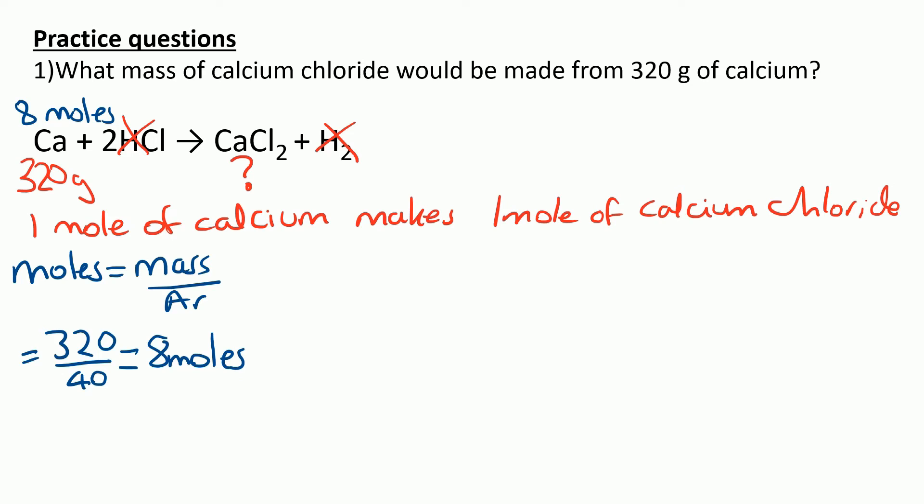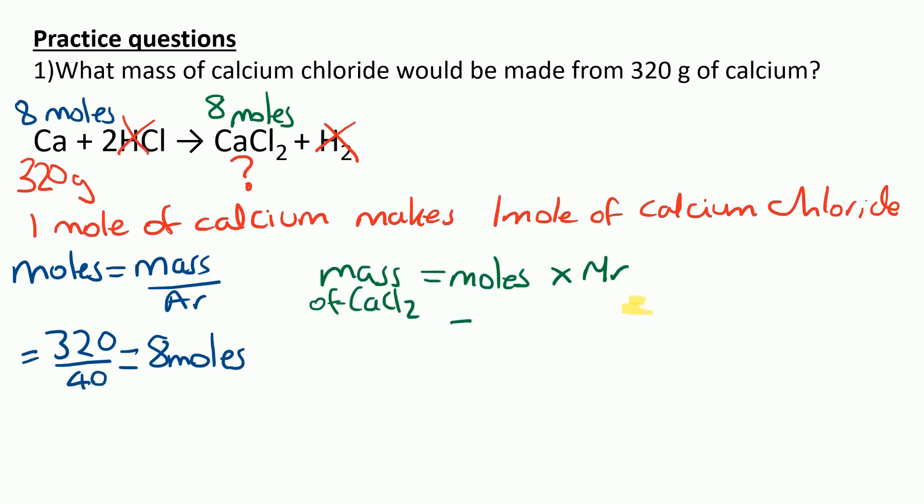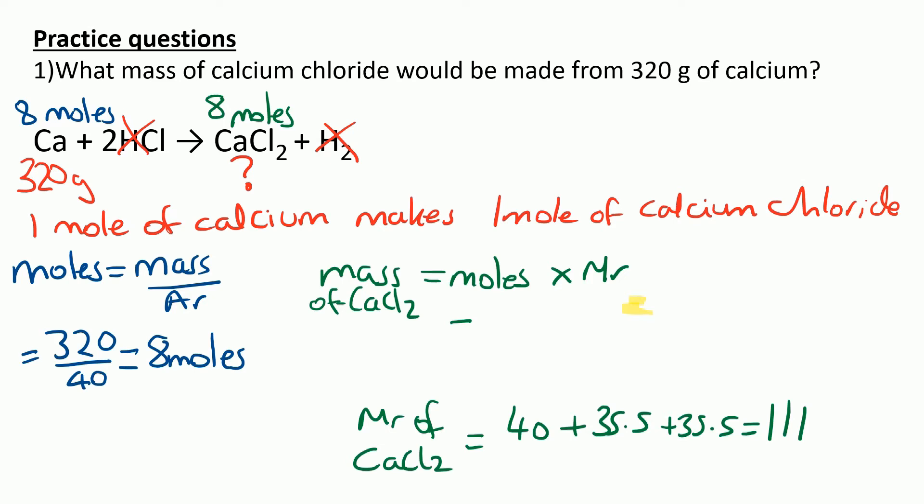We want the mass of CaCl2, so mass is moles times MR. The MR of CaCl2 is 40 for calcium and 2 lots of 35.5 for the chlorine, which comes to 111. We put it in the equation: 8 moles times 111 is 888 grams. Well done if you managed to do that.